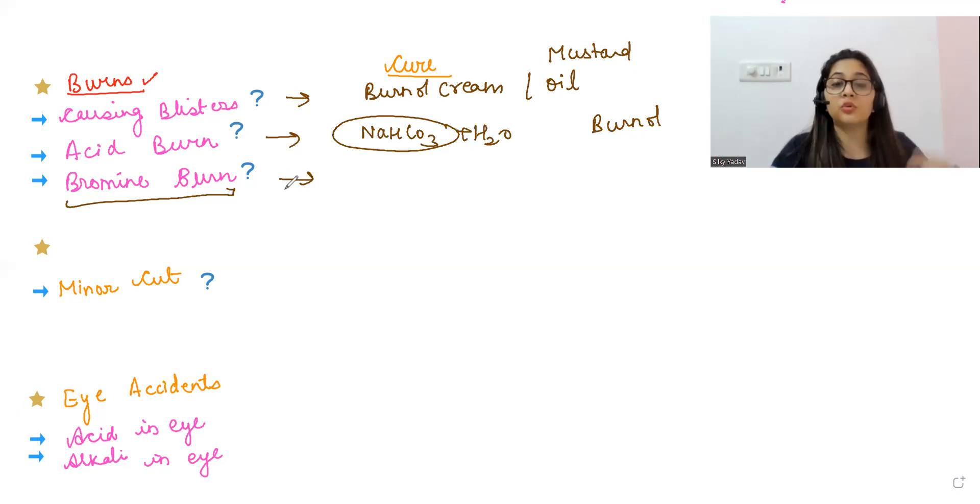Now if it is a bromine burn, you cannot use the same thing which I've told for the acid burn. A simple burn which was causing blisters, we used only the burn-all. If it is acid burn, we used sodium bicarbonate solution and after that applied the burn-all. The third one is if you've got a burn by bromine, there you will use the ammonia solution to properly wipe it off.